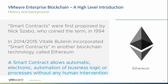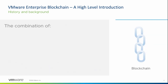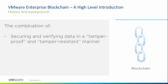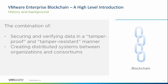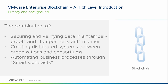Although smart contracts were originally thought about and deployed to cryptocurrency blockchains, businesses very soon realized that this had some benefit in a commercial sense. Those three things — securing and verifying data in a tamper-proof and tamper-resistant manner, creating a distributed system between organizations and consortiums, and automating business processes through smart contracts — definitely got the interest of many businesses and CIOs.